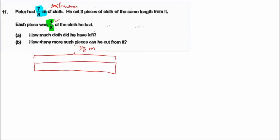He had some cloth left, so that means he didn't cut all of it into three pieces — he cut out some length into three pieces. Here I cut one piece, which must be of equal length. This equal length is what each piece looks like — one piece here. So one piece is one-eighth of the cloth.